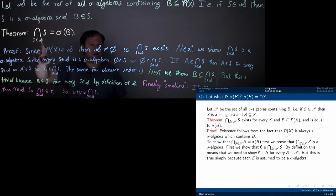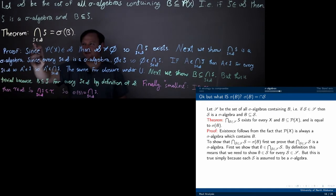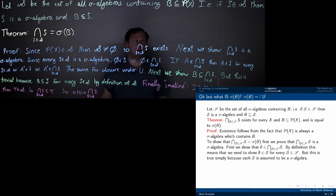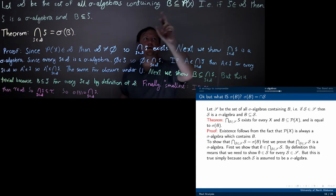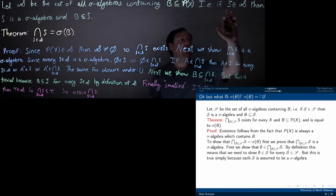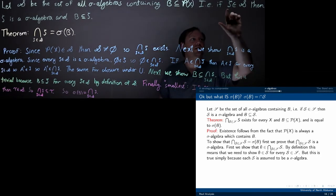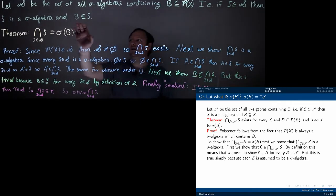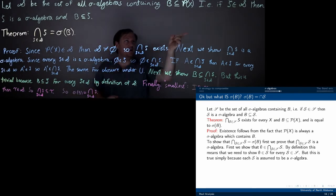We're using this cursive S — I'll call this the calligraphic S, and this is the cursive S. Cursive S is defined to be the set of all sigma algebras containing B. So if anything is in cursive S, it is a calligraphic S — a sigma algebra that contains B as a subset. That's the definition of cursive S.